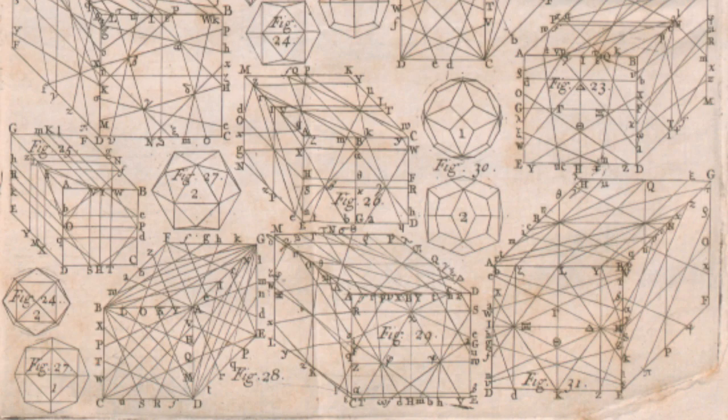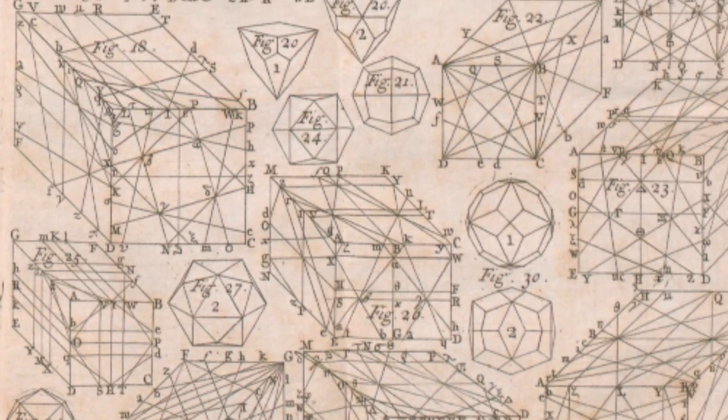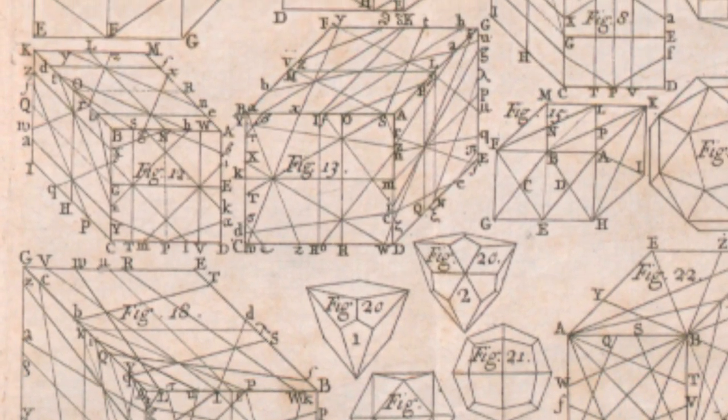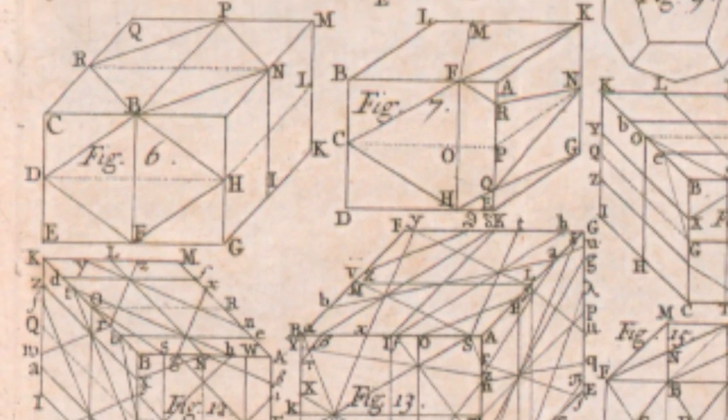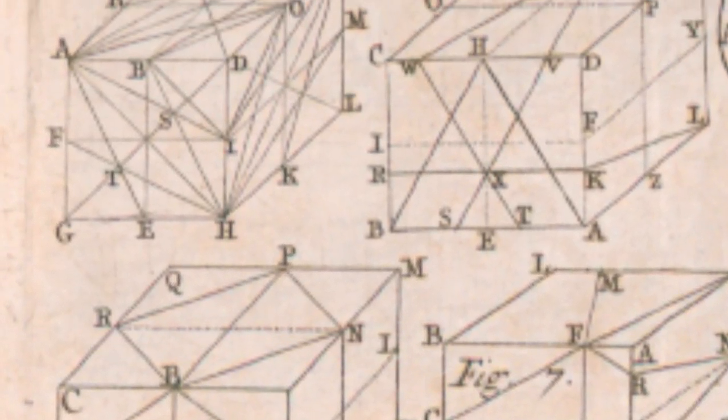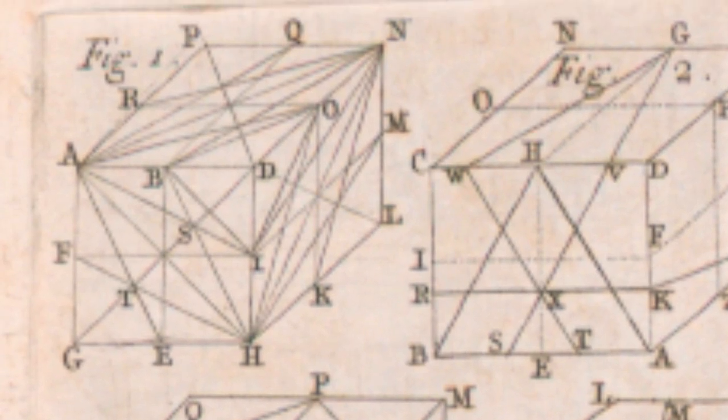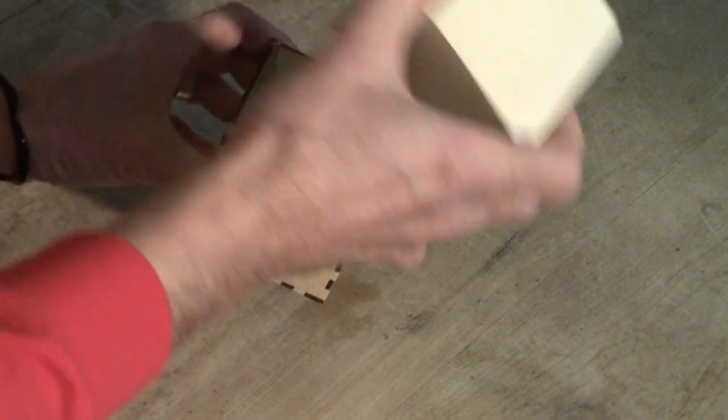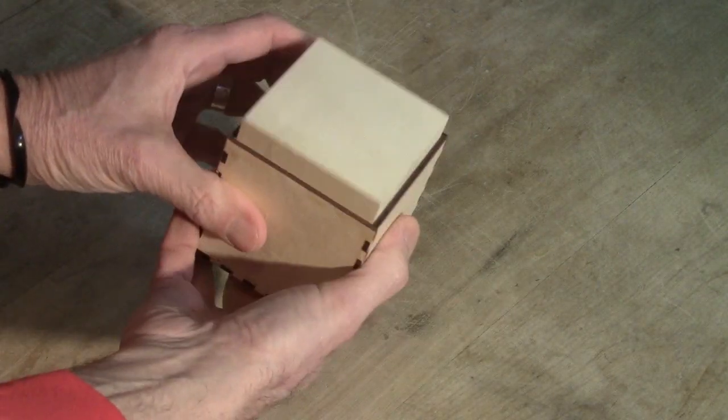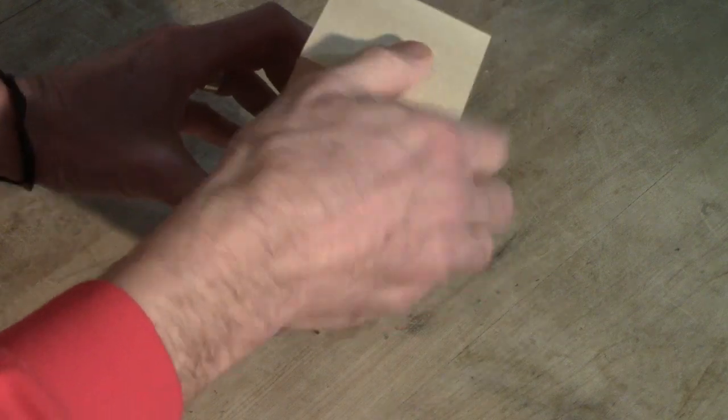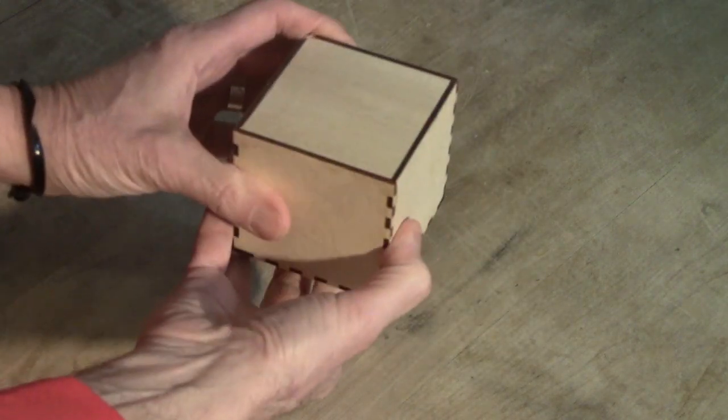So how did Sharpe make his Sharpehedron? His book explains how to start with a cube, mark lines on the surface, then cut at an angle following the lines. With 12 precise cuts, you can slice a cube into a Sharpehedron. I've reproduced his steps. He starts with a cube. I've made a little laser-cut box here to help me check it for accuracy.